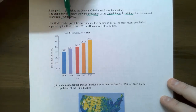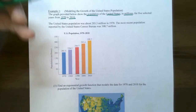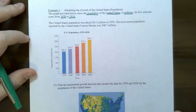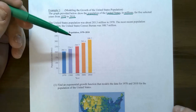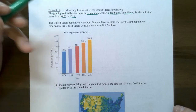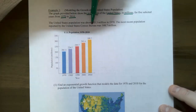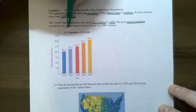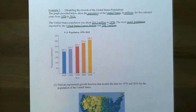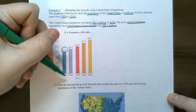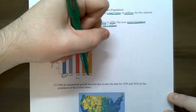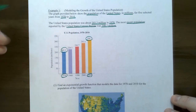The population of the United States is collected every 10 years by the Census Bureau. The bar graph gives us the population in millions for 1970, 1980, 1990, up through 2010. The United States population was 203.3 million in 1970, and the most recent population reported was 308.7 million in 2010. We can represent these as ordered pairs: (1970, 203.3) and (2010, 308.7).